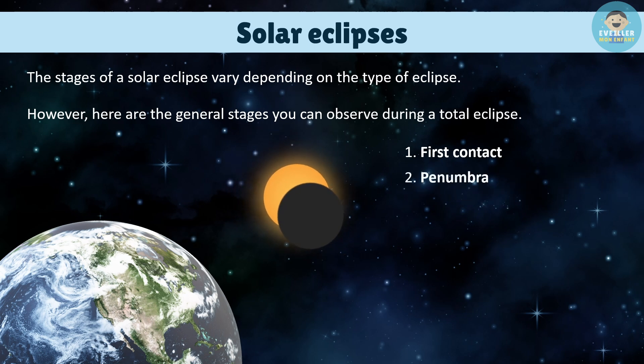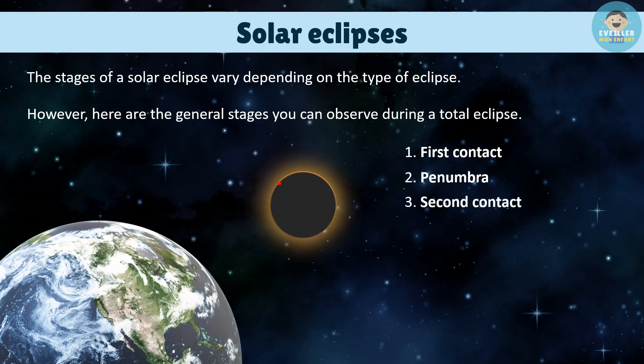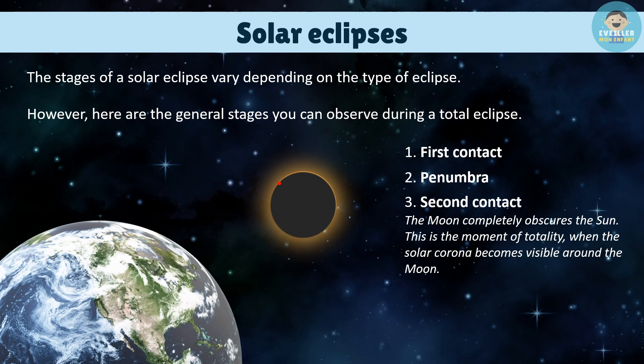Penumbra: the Moon's shadow begins to be projected onto the Earth. Sunlight becomes more diffuse and the temperature may drop slightly. Second contact: the Moon completely obscures the Sun. This is the moment of totality, when the solar corona becomes visible around the Moon.